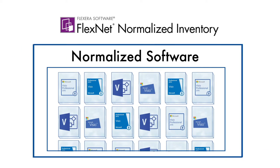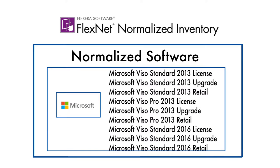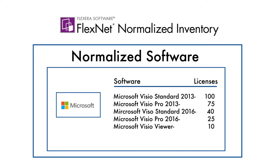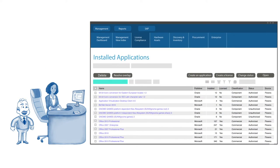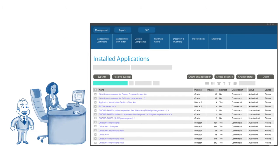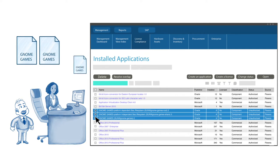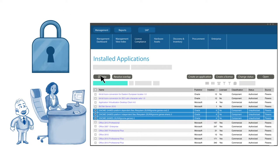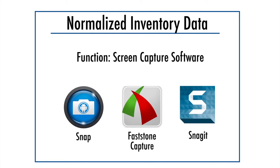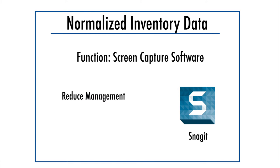Flexera also creates a complete list of all their software assets. The software inventory is normalized — this means the software is identified using standardized naming conventions so that you get accurate counts of installed software. This normalized list allows Tori and Les to get a comprehensive and detailed picture of the software assets deployed throughout their organization, which allows them to see if there are any unauthorized applications in the environment, like games and file sharing apps, which they want to remove to lower their security risk. The normalized inventory data is categorized by function to show redundant apps, which helps them rationalize and consolidate their software portfolio, reducing management and support costs.